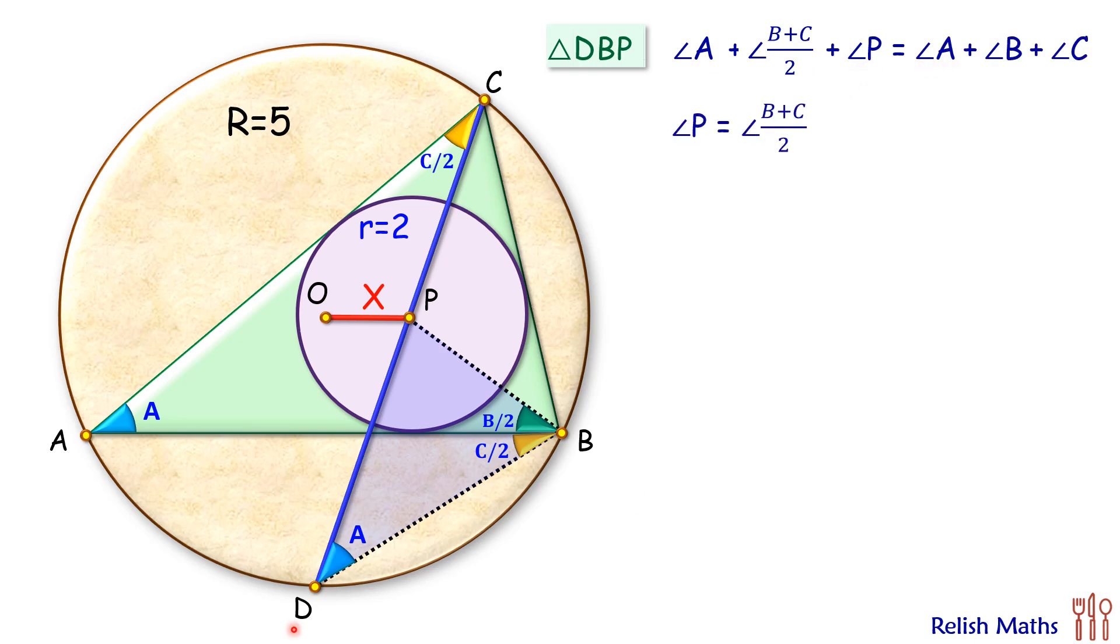Simplifying it, A will get cancelled on both the sides and we'll get angle P is angle B plus C by 2. As this angle is B plus C by 2 and this angle also is B plus C by 2, thus it's an isosceles triangle, or we can say that the length of DP and DB is equal.